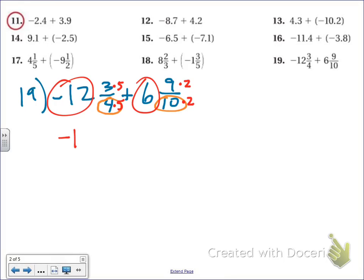So when I rewrite my problem, I have 12 and 15 twentieths, because 3 times 5 is 15, 4 times 5 is 20, plus 6, 9 times 2 is 18, and 10 times 2 is 20.